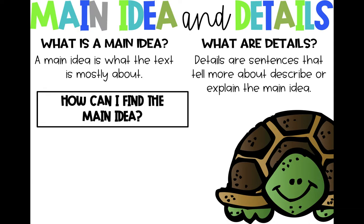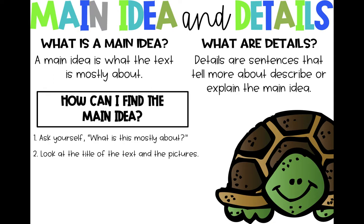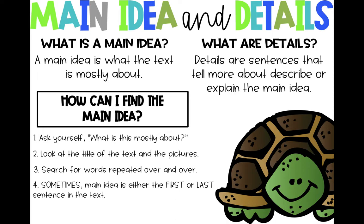How can we find the main idea? First, we can ask ourselves: what is the text mostly about? Then we can look at the title, look at the pictures, and search for words that are repeated over and over. Sometimes — not all the time, but sometimes — we can read the first or the last sentence in the text to see if it tells us the main idea.